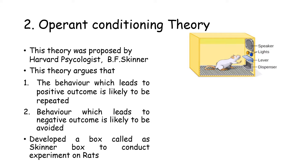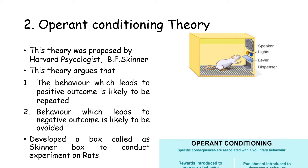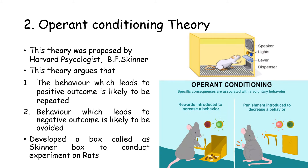The rat learns that pressing the lever gets food. Two lights — red and green — were then introduced into the box. If the rat presses the lever when the green light is on, it receives food as a reward. If it presses the lever when the red light is on, it receives a mild electric shock. The rat soon learns to discriminate between the two lights, pressing the lever only when the green light flashes. Skinner proved that behaviors followed by satisfying and rewarding consequences are more likely to be repeated, known as positive reinforcement, while behaviors followed by unpleasant consequences such as punishment are less likely to be repeated, known as negative reinforcement.